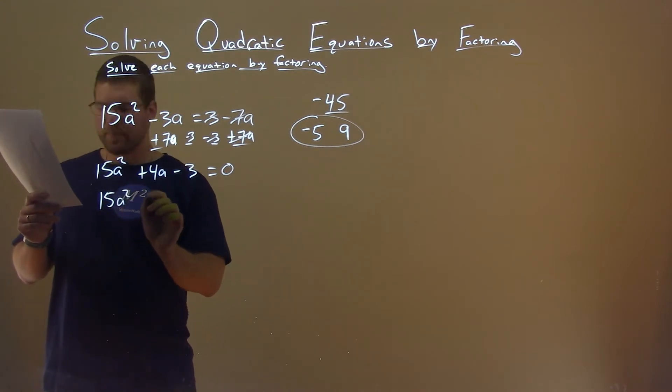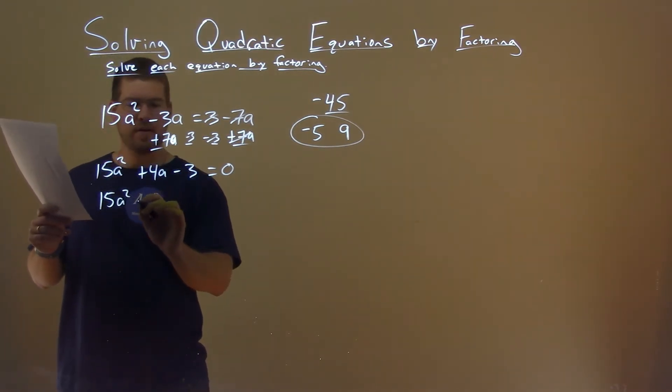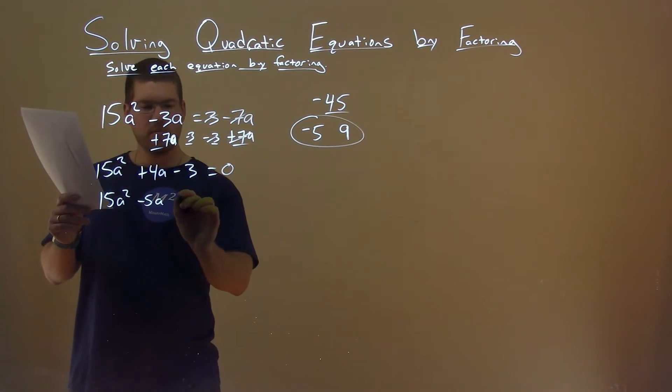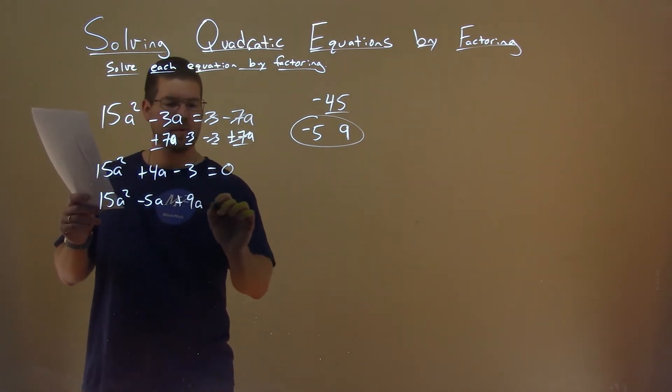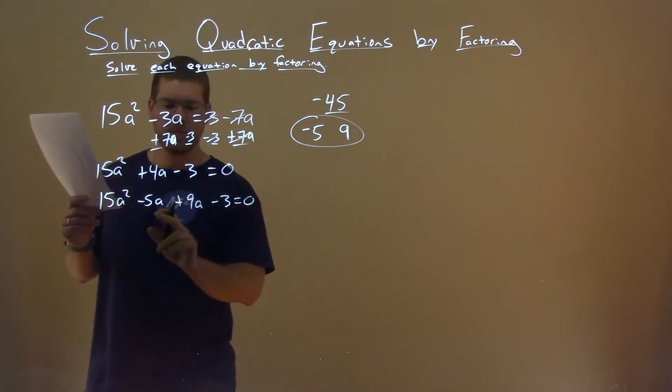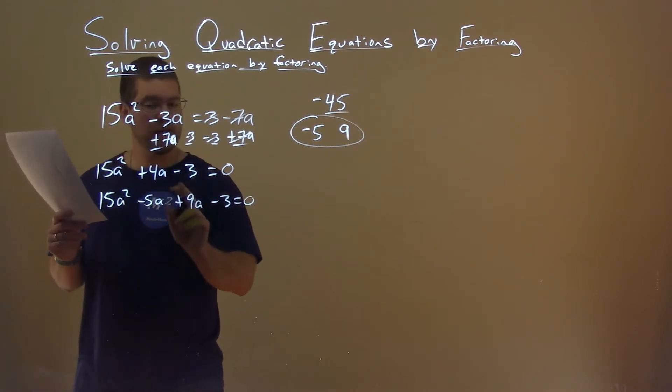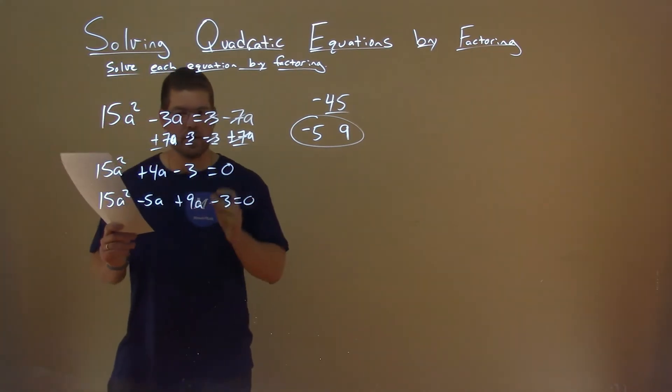So 15a² comes down, and then I'm going to put -5a here, plus 9a, -3, equals 0. And again, notice 5a plus 9a equals that 4a, so it's the same equation.